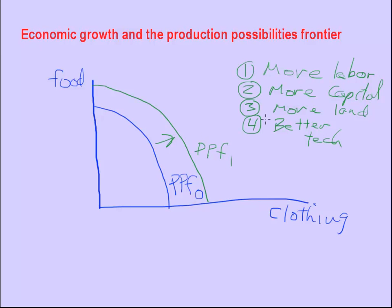So technological improvement. It could also be better management. And let's list better entrepreneurship as well. Some countries are better than others at entrepreneurship, innovation, and new products. And obviously these factors interact with each other.